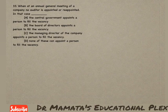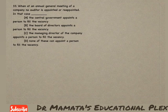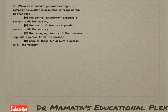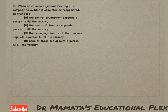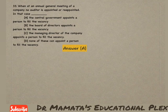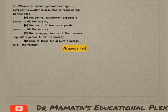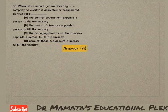Next question: When at an annual general meeting of a company no auditor is appointed or reappointed, in that case — the central government appoints a person to fill the vacancy, the board of directors appoints, the managing director appoints, or none of these? Option A, the central government appoints a person to fill the vacancy, is the correct answer.